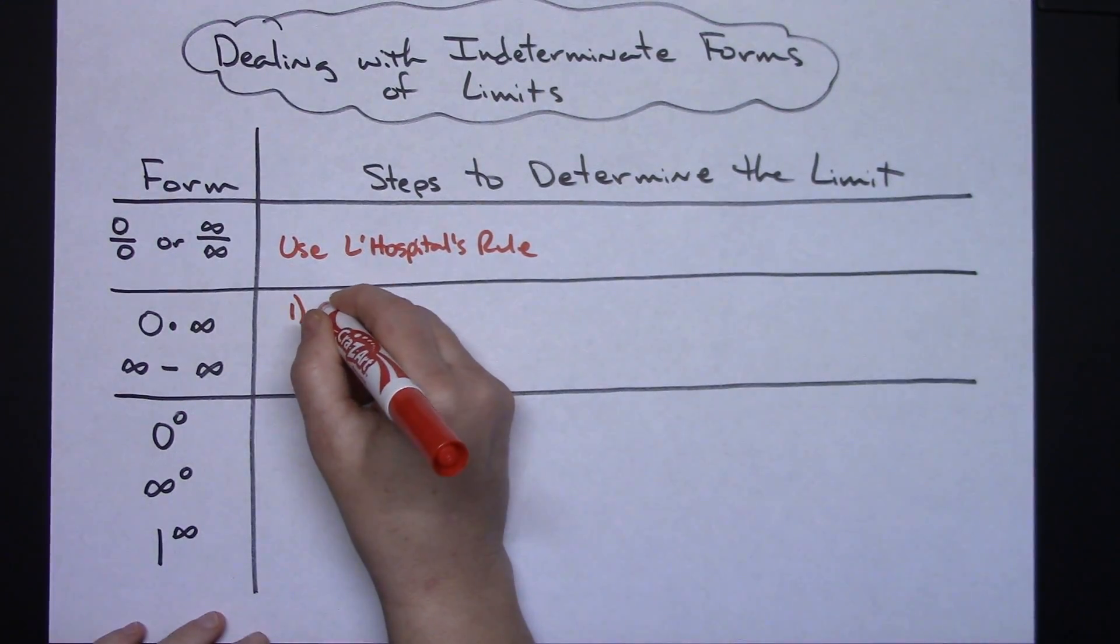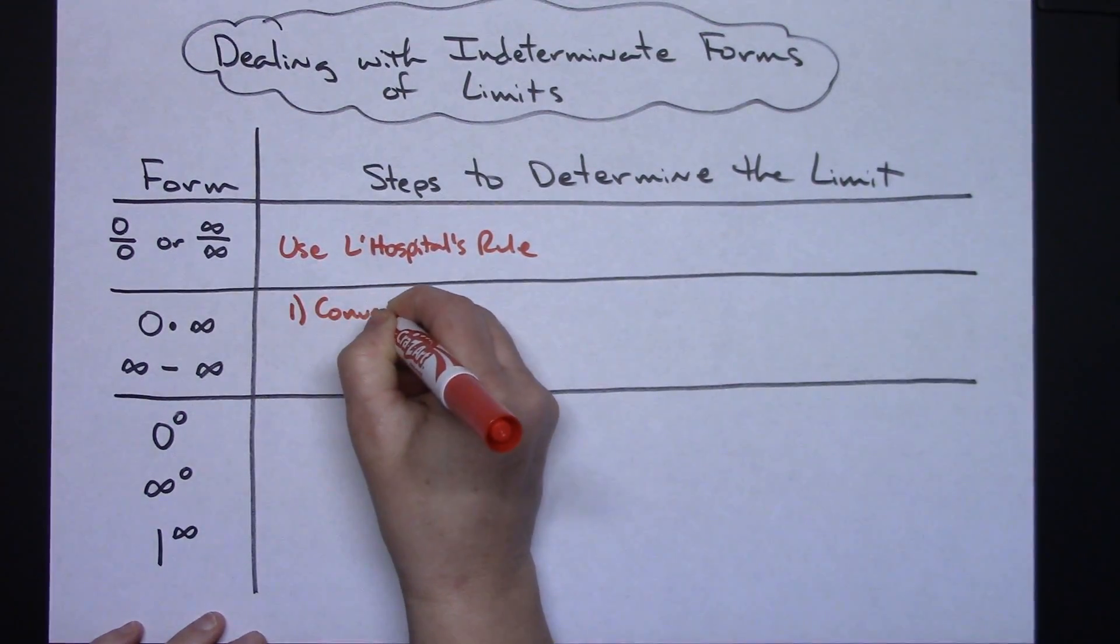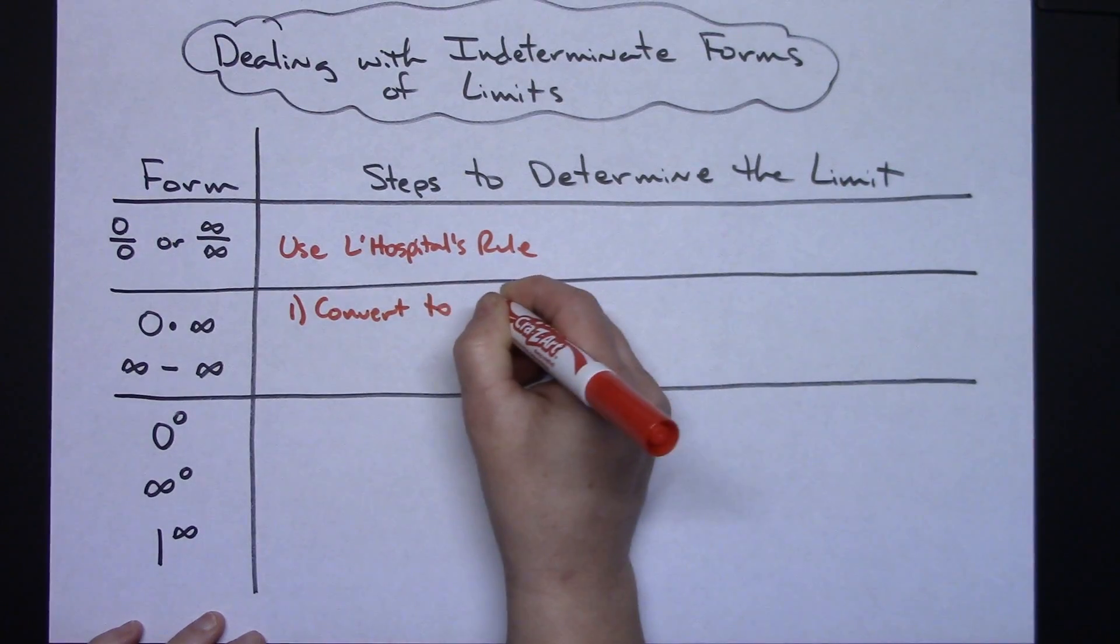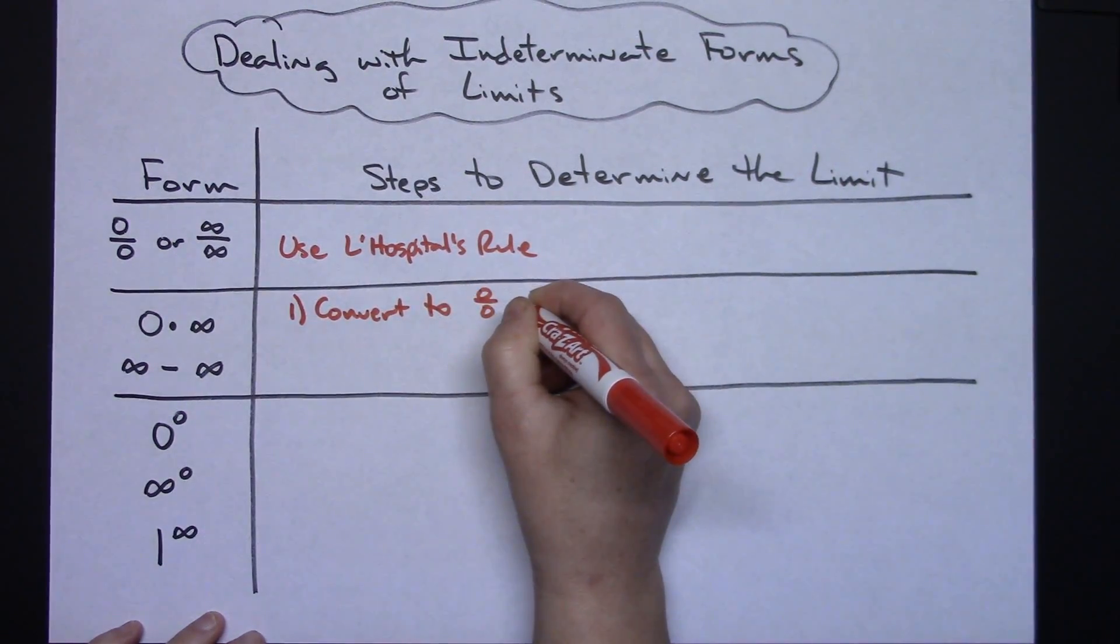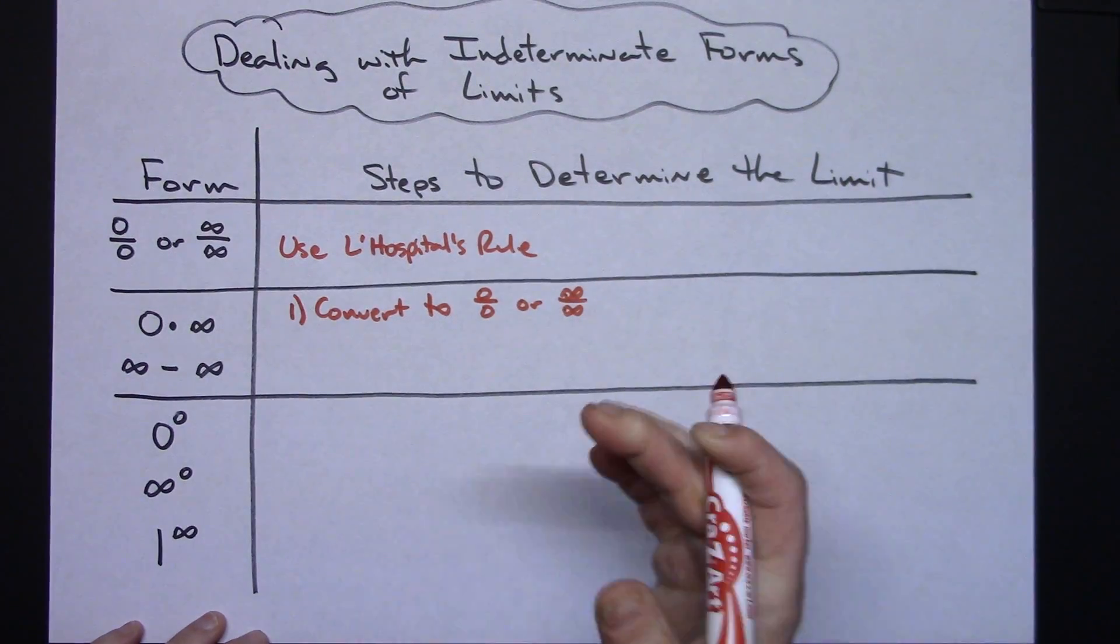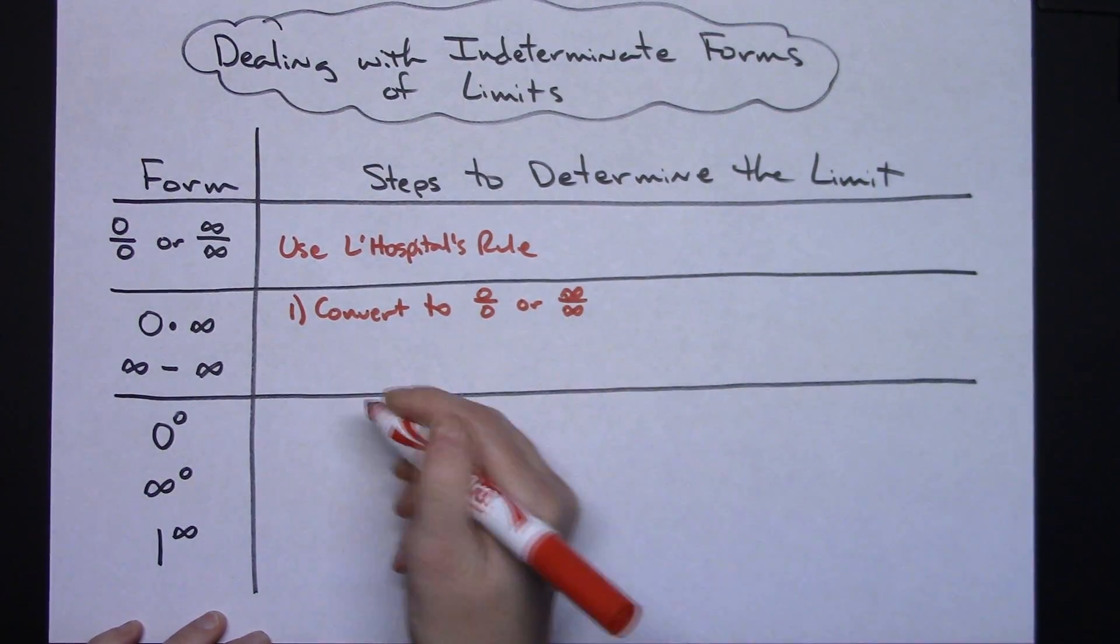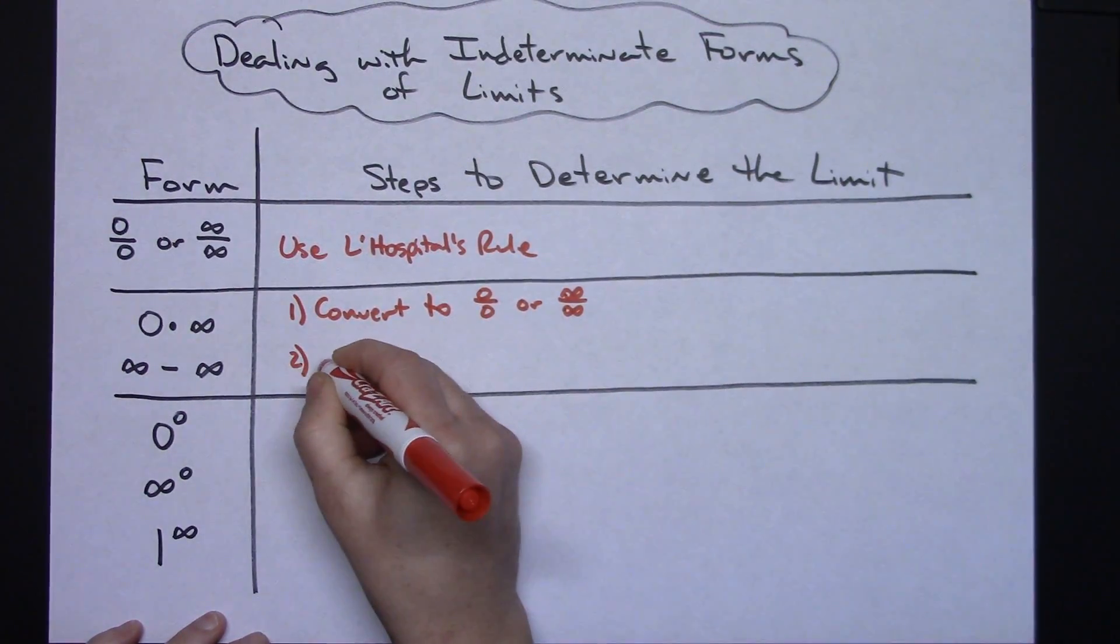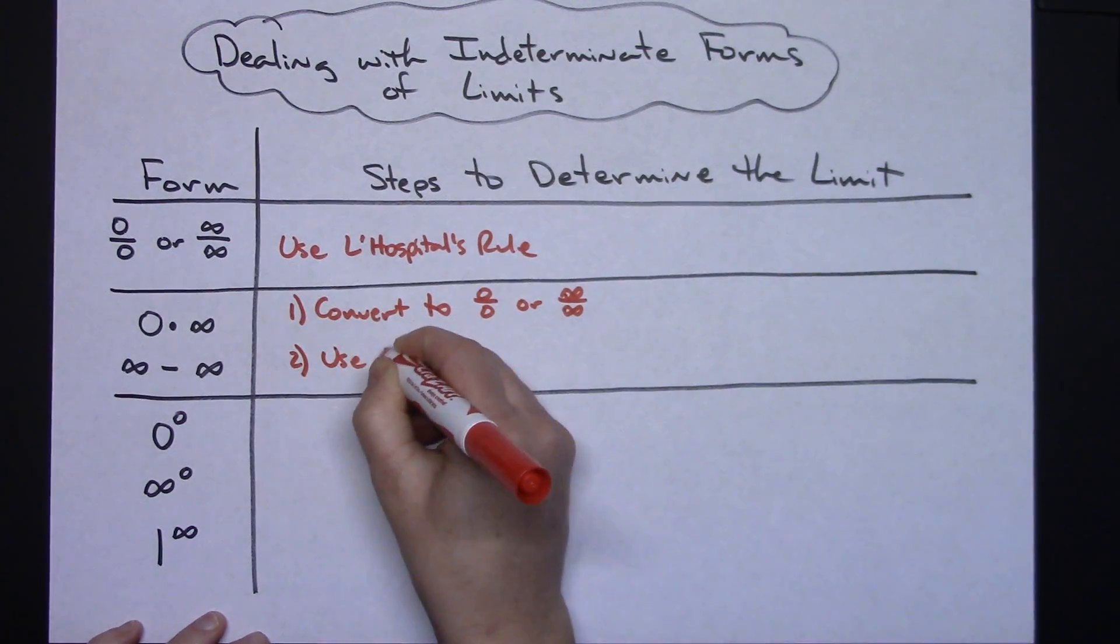Our first step, we're going to want to convert to either zero over zero or infinity over infinity. You'll manipulate your function to convert it to one of those two forms, and then step two would be to use L'Hopital's rule.